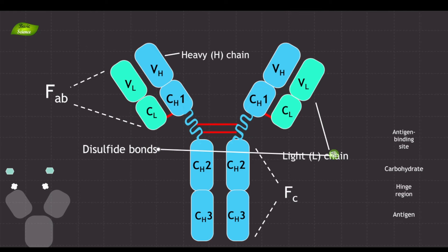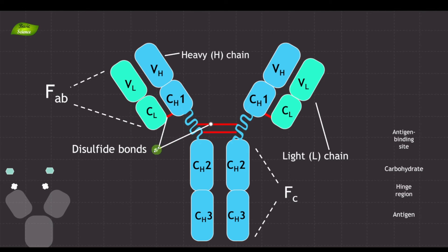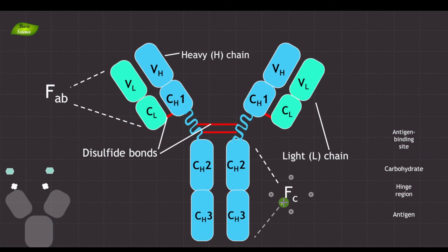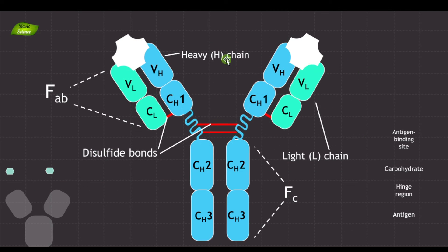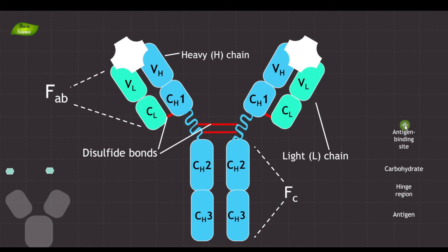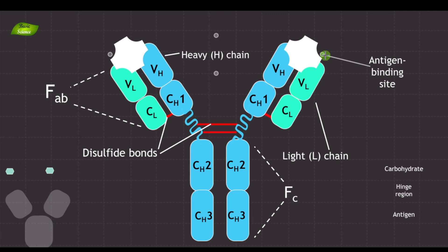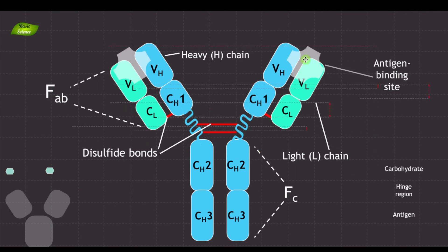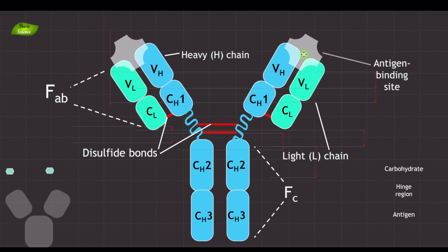These red-colored bonds are the disulfide bonds — now labeled for clarity. Next is the antigen binding site. Just imagine these are two antigenic epitopes — they have the ability to bind to this variable region. Because they bind to this region, this region is known as the antigen binding site. The white-colored molecule represents the actual antigen; when it binds into the antibody, the region that recognizes it is the antigen binding site.